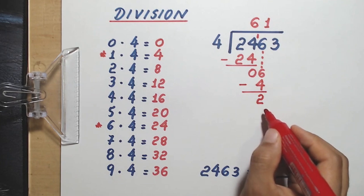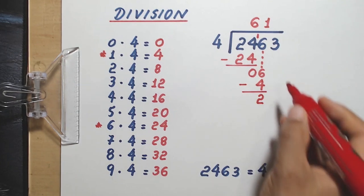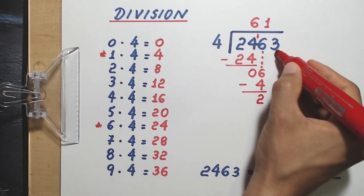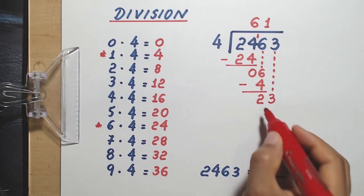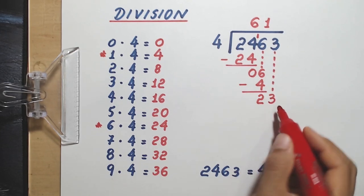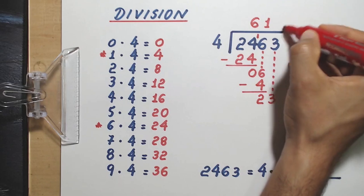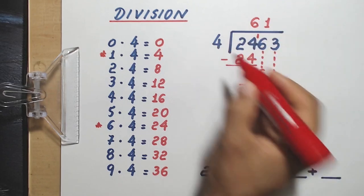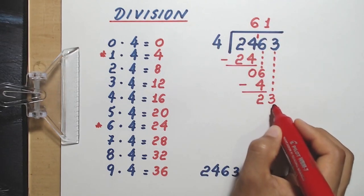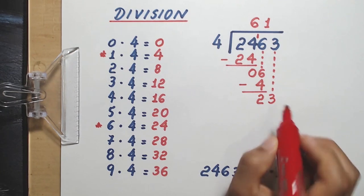After a subtraction, you bring down the next digit. In this case, this 3 right here. Now we have 23 here, and we ask the question, what number from 0 to 9 do I multiply by 4 to get almost 23, but not more than 23?